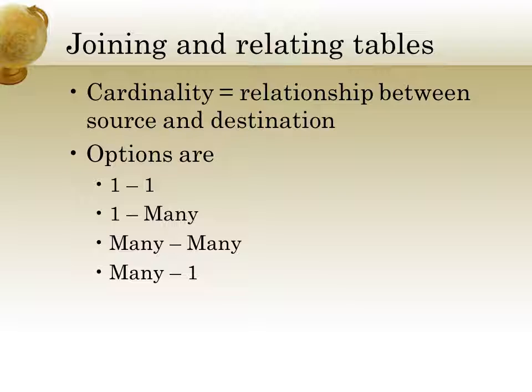Many-to-one is slightly different. We talked about joining states to cities, but what if we're joining cities to states? If we have population of all the cities and we want to know the population of all the cities in each state, then we have to combine all that city information because we're only going to join it to one state. That is an example of a many-to-one.